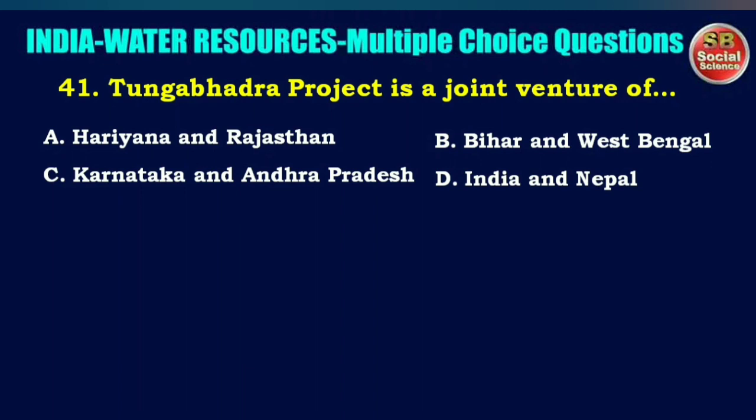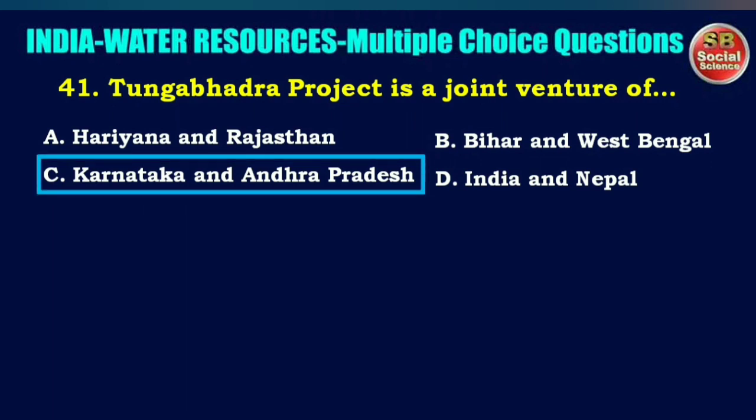Tungabhadra project is a joint venture of — options are Haryana and Rajasthan, Bihar and West Bengal, Karnataka and Andhra Pradesh, or India and Nepal. The right answer is option C: Karnataka and Andhra Pradesh.